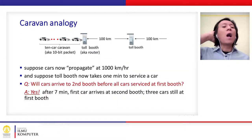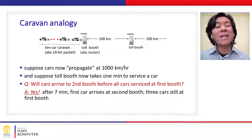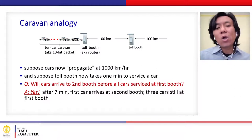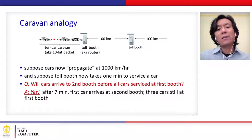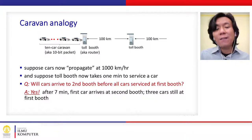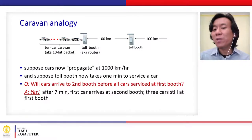Now let's modify the scenario. Suppose the car's speed is 1,000 kilometers per hour — 10 times faster — so it only takes 6 minutes to propagate between booths. But the toll booth now takes one minute to service each car. The question is: will cars arrive at the second booth before all cars are served at the first booth? Yes — the last car will take 10 minutes of queuing, but the first car can arrive at the second booth before that.